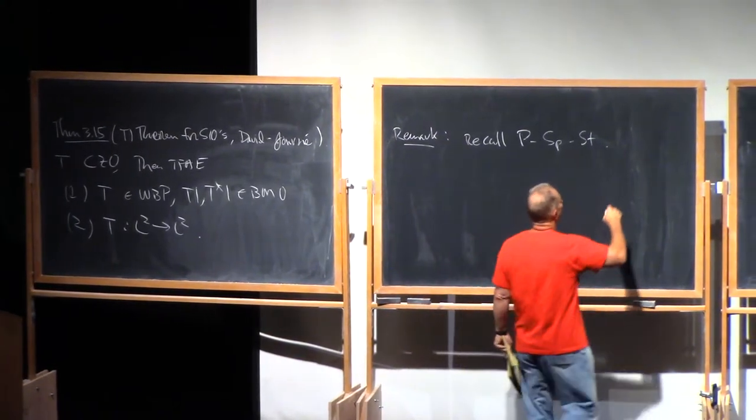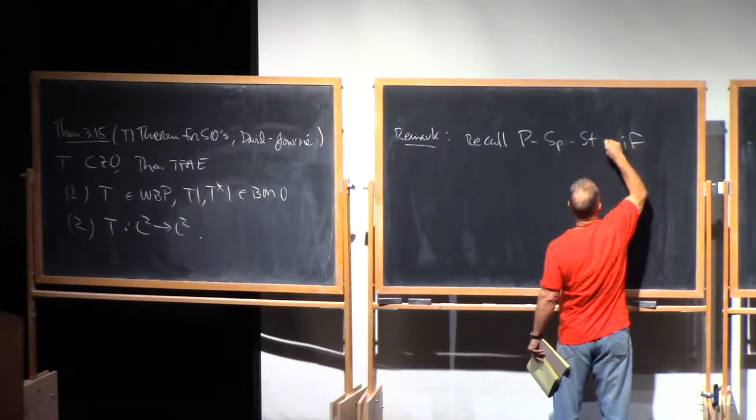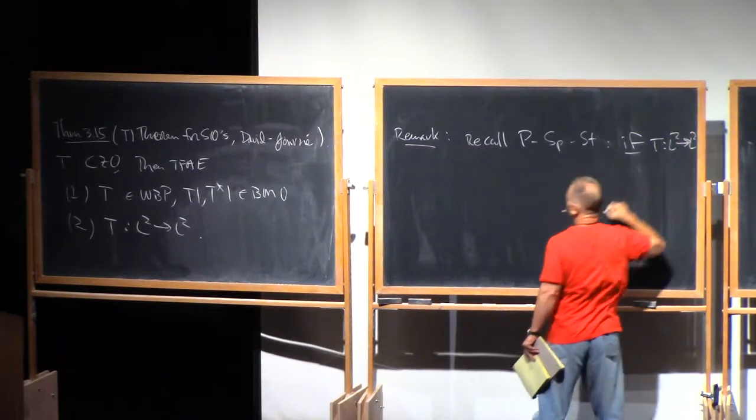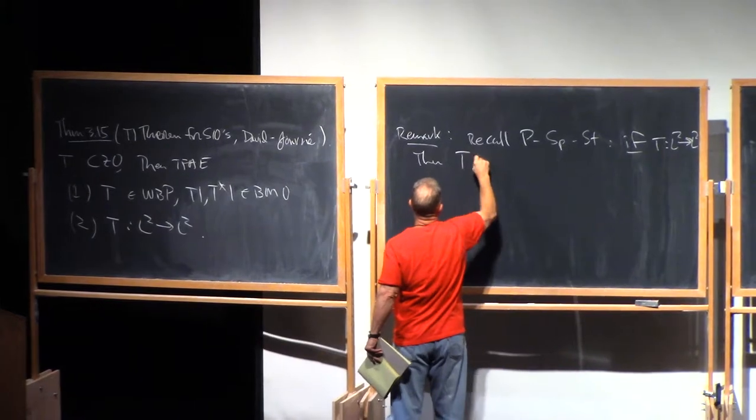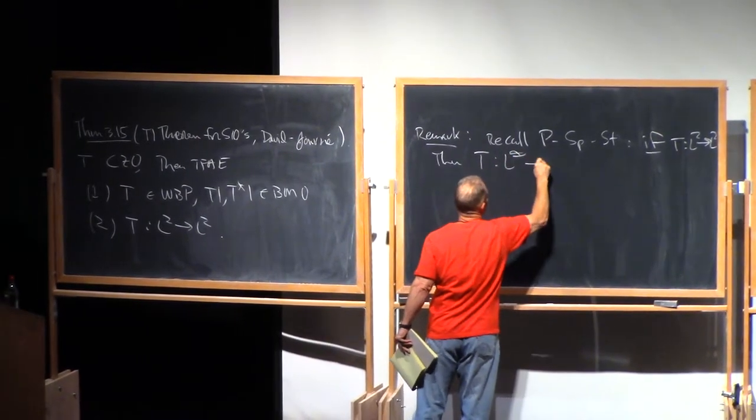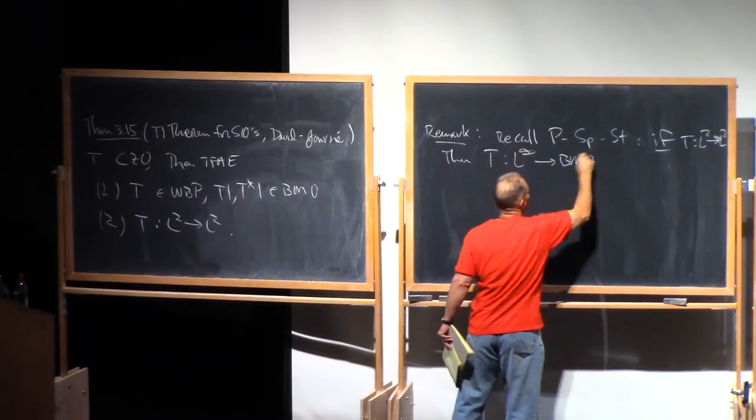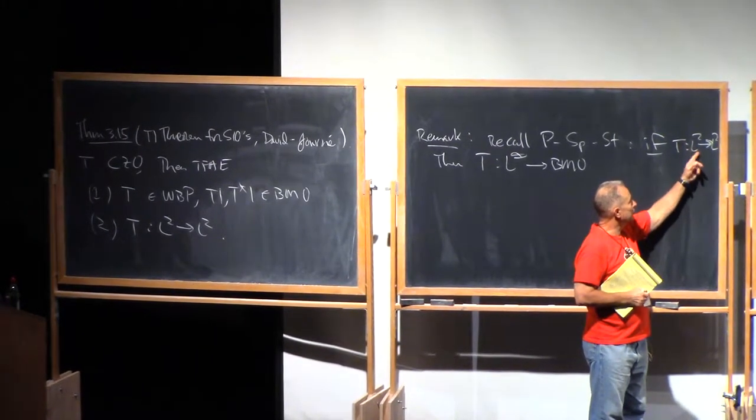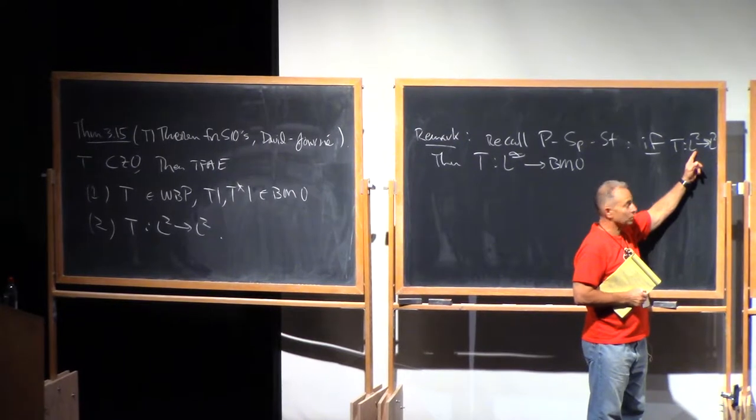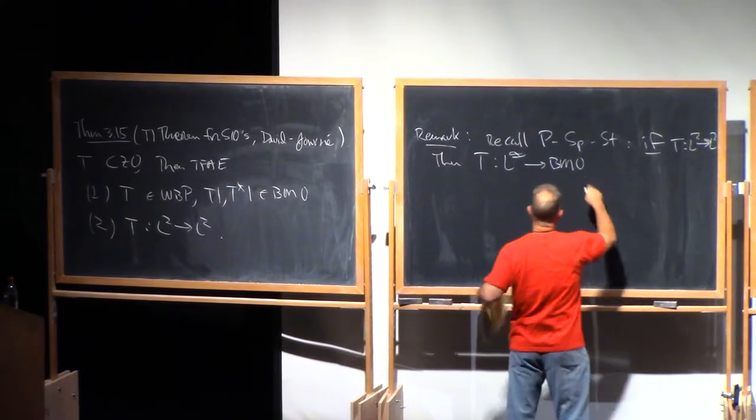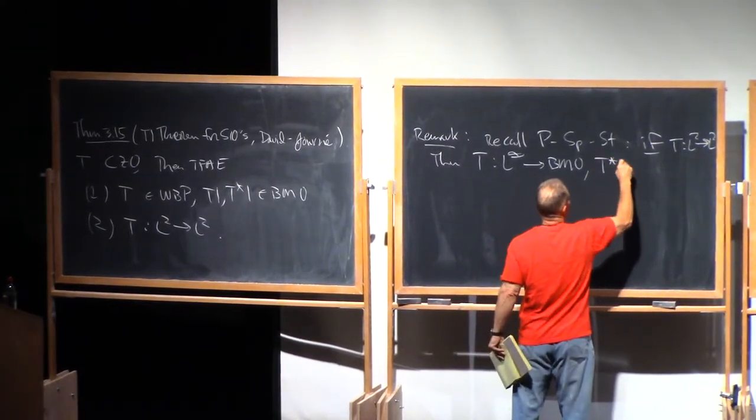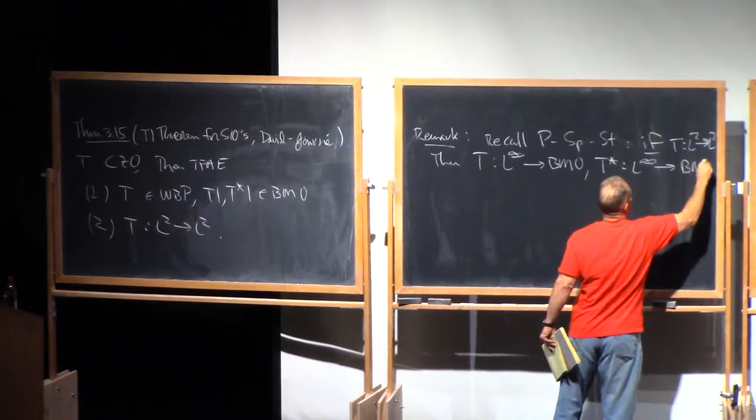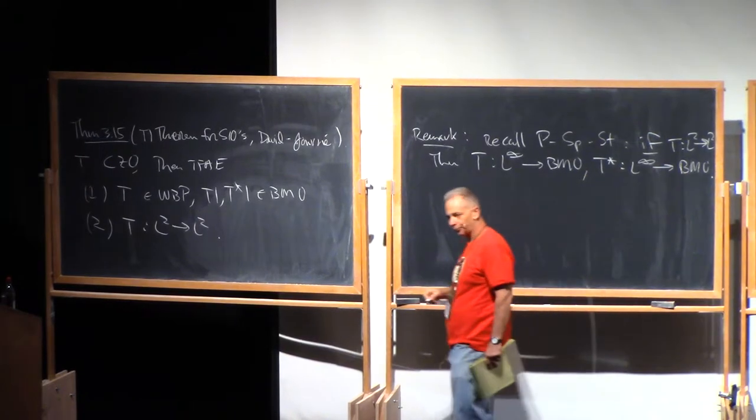Which said that if T is bounded on L2, then T maps L infinity into BMO. And in fact, if by basic Hilbert space theory T is bounded on L2, so is T star. And therefore also T star maps L infinity into BMO.